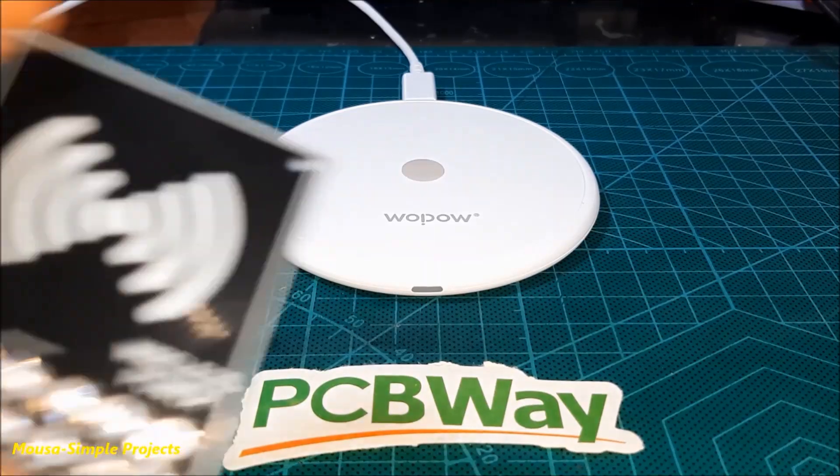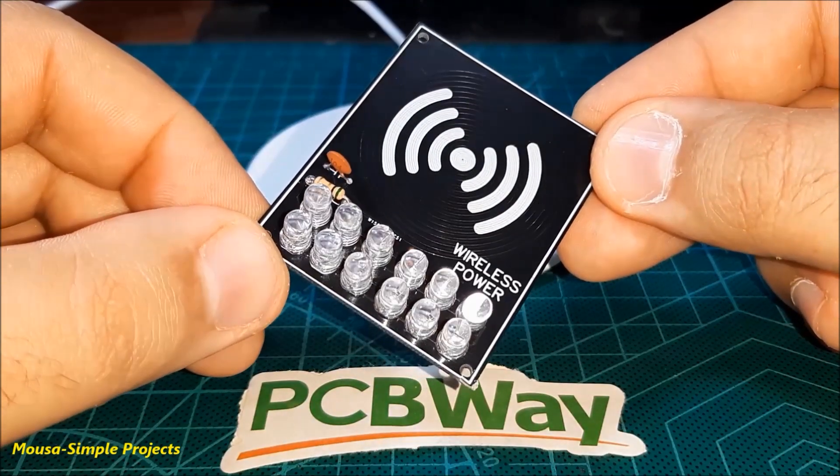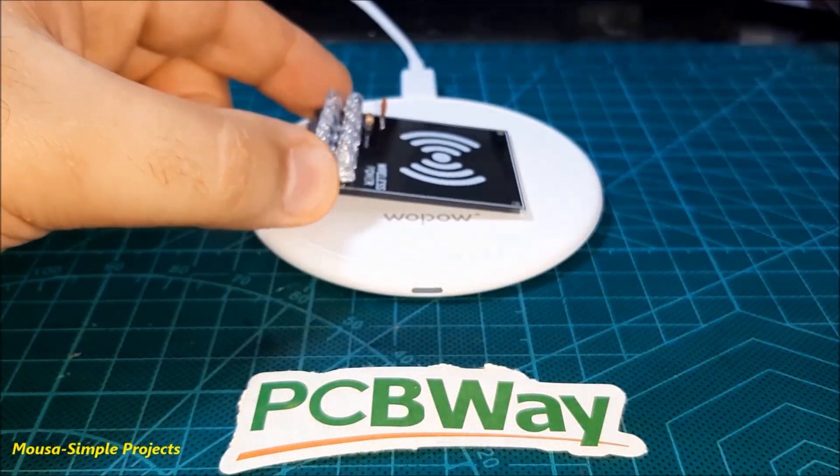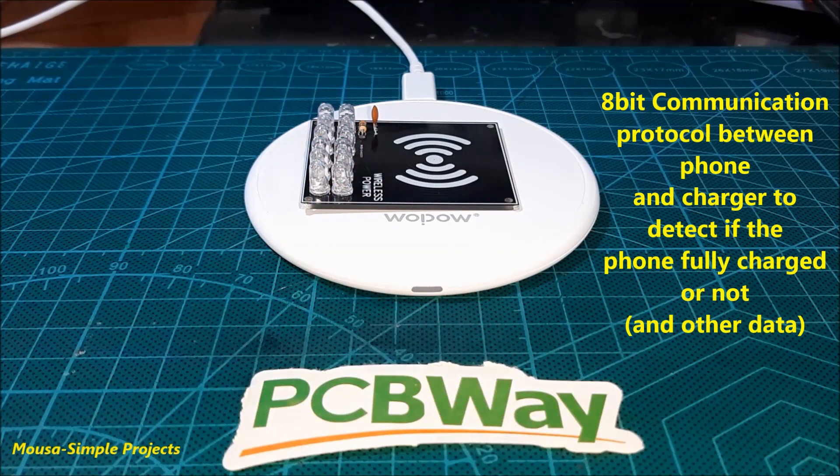And finally, let's see, does my circuit work with a commercial wireless charger or not? As you can see, the LEDs just flashing. The reason for that, because the commercial wireless charger starts to emit power just when it detects the phone. So this is a kind of communication between the charger and the phone.